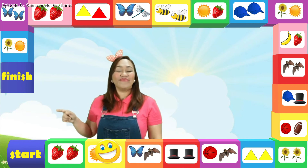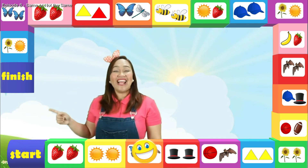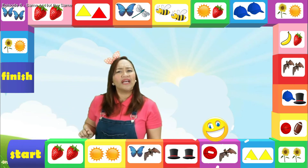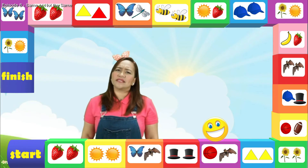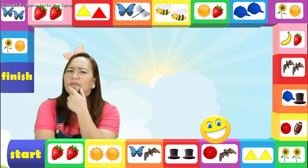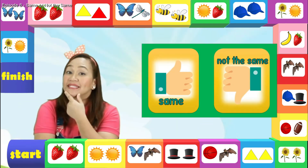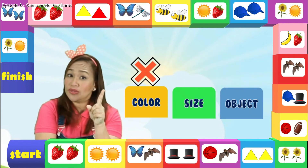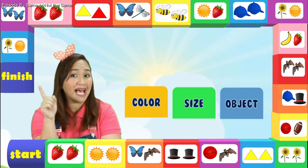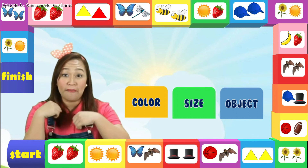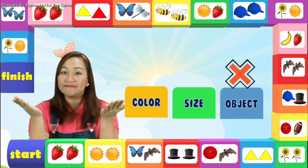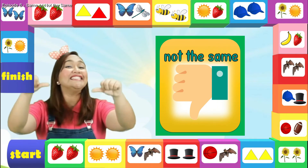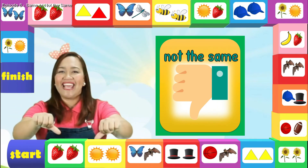One, two, three, four, five. It's the ball and the bat. Is the ball and the bat the same or not the same? Do they have the same color? Do they have the same size? Are they the same objects? That's right, it's not the same. They are different.